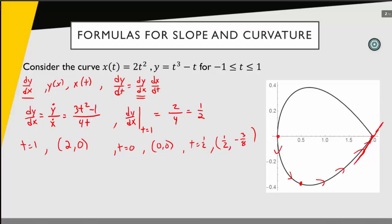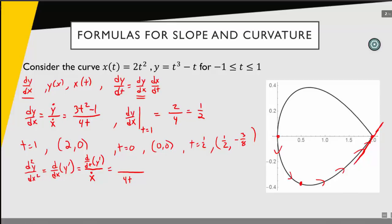Now what if I want to calculate the second derivative of y with respect to x? The thing to remember is this is just the derivative of the first derivative, which I'll write as y prime. When I took the derivative of y, I took the derivative of that with respect to t as my numerator and divided by the derivative of x with respect to t. The same structure applies here: the derivative of x with respect to t is in the denominator, and in the numerator I get the derivative with respect to t of y prime, which I already have as a function of t.